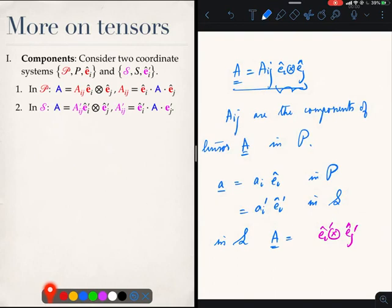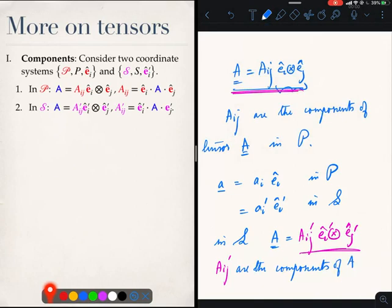In S, A will be aij prime ei prime tensor ej prime. I am expressing A in terms of the tensorial basis ei prime tensor ej prime in S. And these aij prime are the components of A in S.